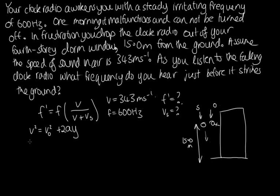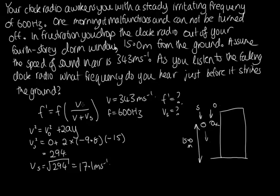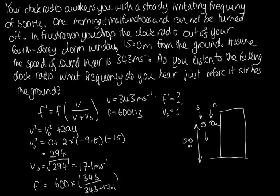The initial velocity is 0 (dropped from rest). It accelerates downwards at 9.8 m/s² over a displacement of −15 metres. So v² = 0 + 2 × 9.8 × 15 = 294, giving v_s = √294 = 17.1 m/s. Now substituting: f dash = 600 × 343 / (343 + 17.1). Solving on the calculator, we get 571 hertz.